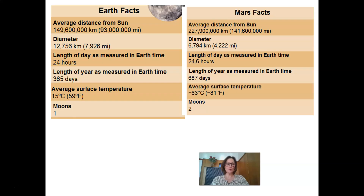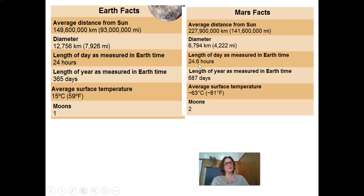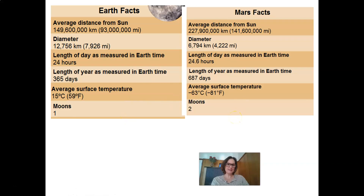Let's take a closer look using the fact sheets on Earth and Mars. The length of day is 24 hours on Earth, and 24.6 hours on Mars. The length of year is 365 days on Earth, but 687 days on Mars. The average surface temperature on Earth is 15 degrees Celsius, and on Mars it is minus 63 degrees Celsius. Earth has one moon, whereas Mars has two.